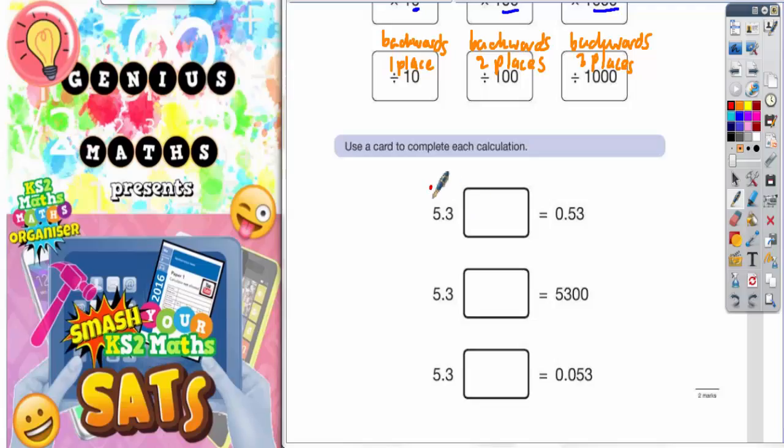If we have a look at the column headings, this would be units and this would be tenths. Over here, it's zero in the units and the five has now moved to the tenths, and the three is now in the hundredths. The five has gone backwards one place from the units into the tenths column, and the three has gone backwards one place from the tenths into the hundredths column.